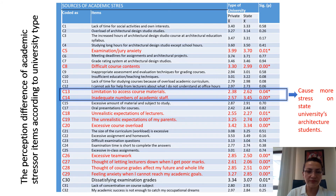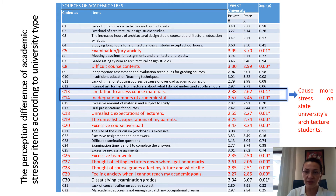To determine the differentiation in perception of academic stressors between architecture students educated at different types of schools, an independent sample t-test was conducted. According to the results, there are statistically significant mean differences at 12 items. Two of these items cause more stress on state university architecture students, while the other 10 items cause more stress on private university architecture students.